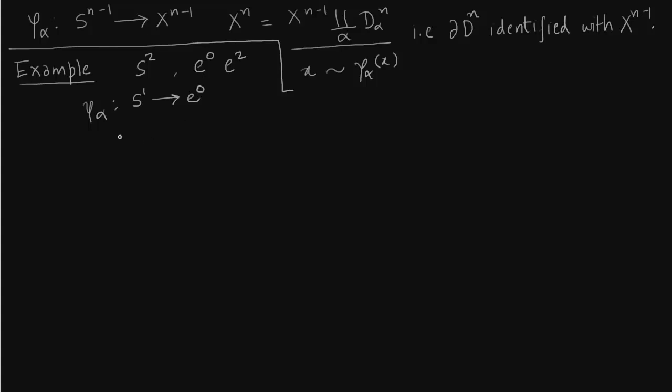Okay so how does it look like? So since we are constructing S^2 we have dimension 2 so we need to start with D^2. So D^2 is this disk. Yeah this disk has a boundary.